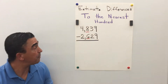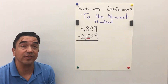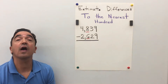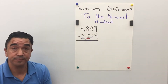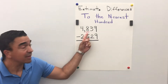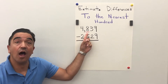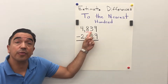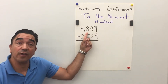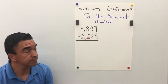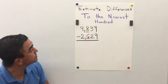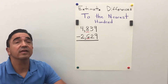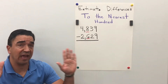Let's start by rounding 4839 to the nearest hundred. Eight is in the hundreds place, so the three is going to tell the eight what to do. The three is going to tell the eight to stay the same.